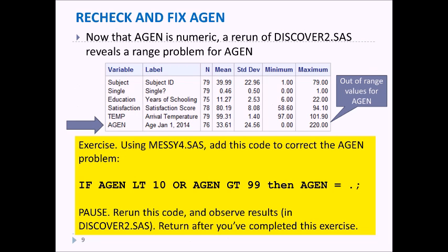So now that AGEN is numeric we rerun discover2.sas to see if our problems have been fixed and for education, satisfaction, and temp they have been fixed, but now we see that AGEN is out of range from a minimum of zero to a maximum of 220.